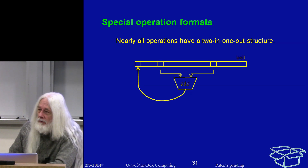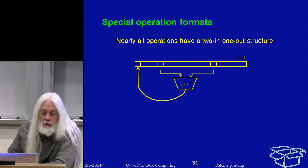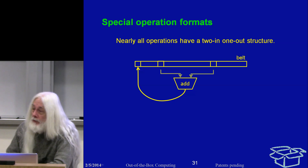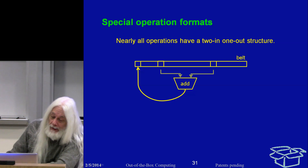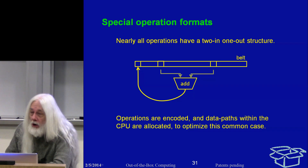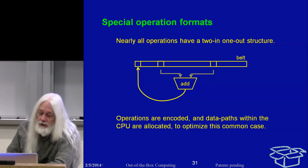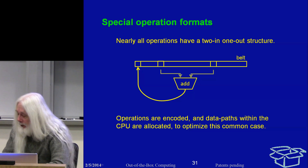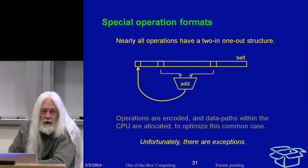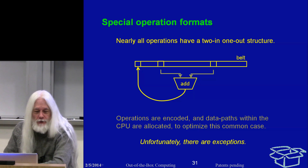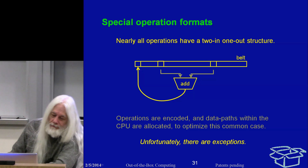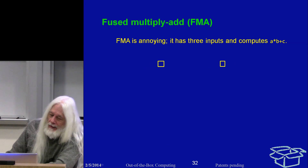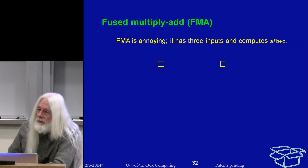Consequently, there are data paths to feed functional units which carry two data in and one data out. The belt provides the input values, and the adder takes two inputs and produces one result. The operations are encoded and the data paths are designed to support this — essentially all machines do this. Unfortunately, there are operations that are exceptions to the two-in and one-out rule. One of them is fused multiply-add, which has three inputs and computes a×b+c.